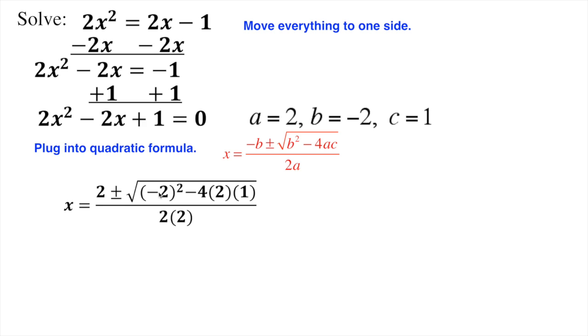I know that negative 2 squared is 4. I know that negative 4 times 2 is negative 8, times 1 is negative 8. So we're just simplifying it just one step further. 2 times 2 is 4.